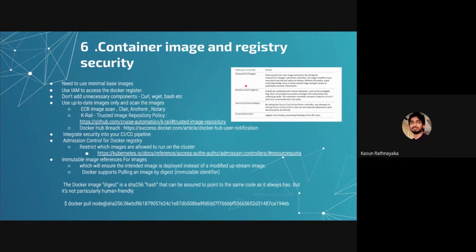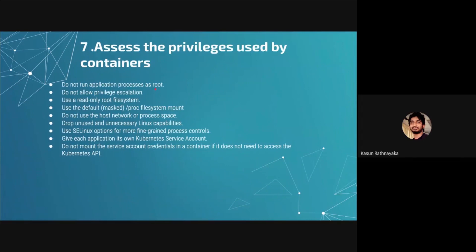The other topic is access privileges for containers. When designing your containers, definitely: have read-only access rather than read-write where possible, do not run any applications as root, do not allow privilege escalation, do not use the default masking of the proc directory mounted into your images, and do not use host network. Host network means the network running on your nodes and the network running on your pod should be separate — if a network-level attack happens, that secures your environment.